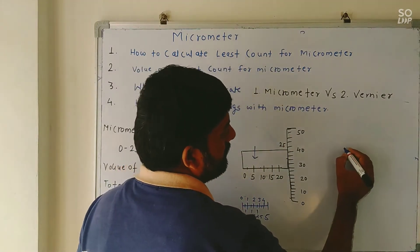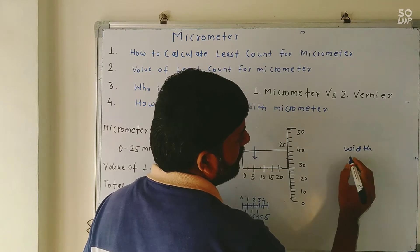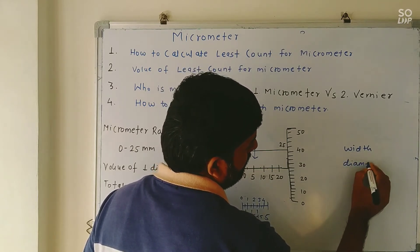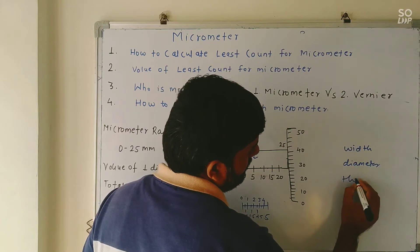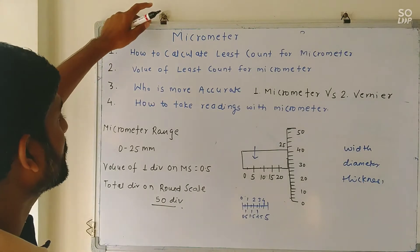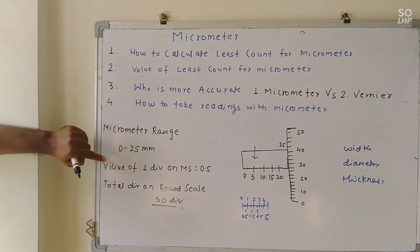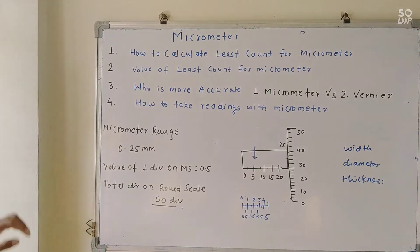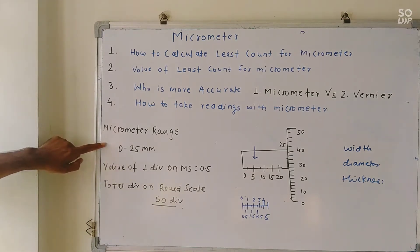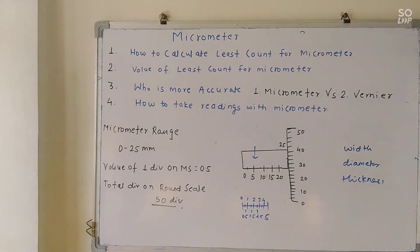Micrometer is a linear measuring instrument, so we can calculate width, diameter, and thickness. These linear parameters we can calculate with the help of micrometer. In the practical we have taken a micrometer whose range is 0 to 25 mm, and on the screen you can see the micrometer whose range is 0 to 25 mm.